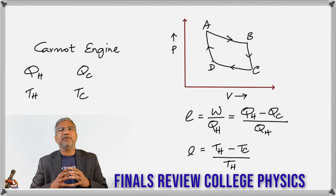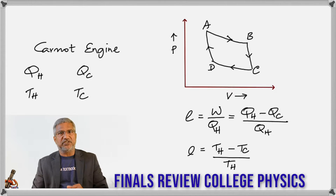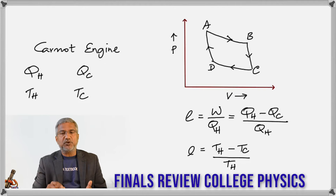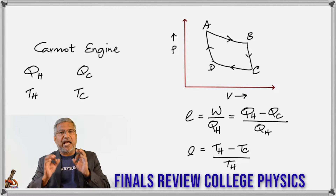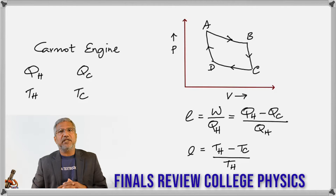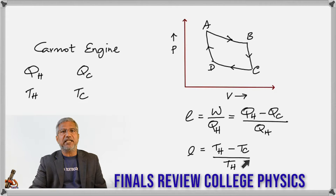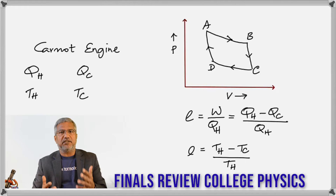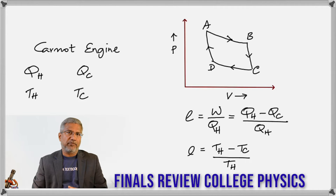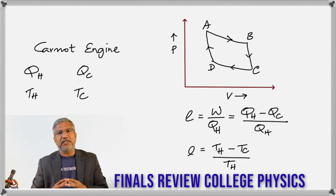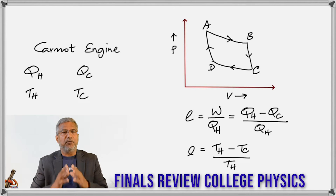Remember that the maximum efficiency of Carnot's engine is 100% (or 1), and that happens when TC is absolute zero. This is the idea behind the Kelvin scale of temperature — there cannot be negative temperatures, because if TC were negative, two negatives would make a positive and E would be more than 1 or 100%, which is impossible. So the lowest temperature that can be reached is absolute zero.